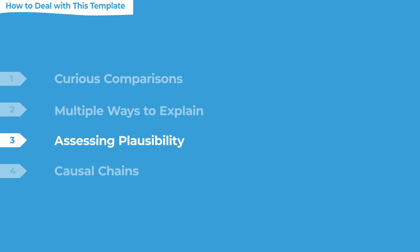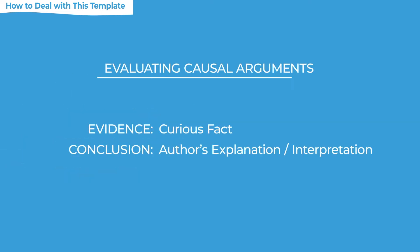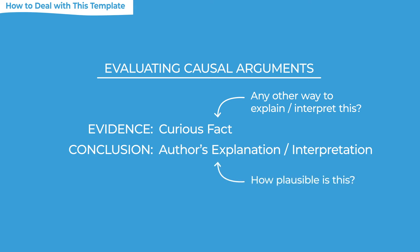In addition to chasing down alternate storylines, the test will ask us to evaluate or assess the plausibility of the author's storyline. When you see a causal argument with a curious comparison and the author concludes 'this must explain it,' there are two different pressure points. One is: is there some other way we could explain it? The other is: how plausible is the author's hypothesis? What information could help me assess whether the author's storyline seems right or seems wrong?